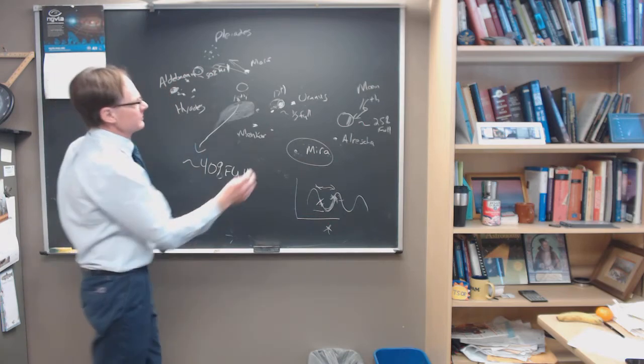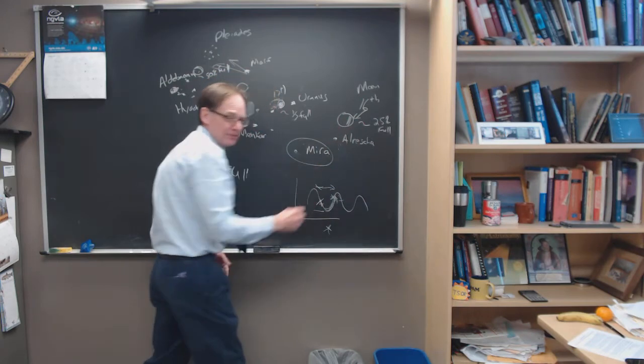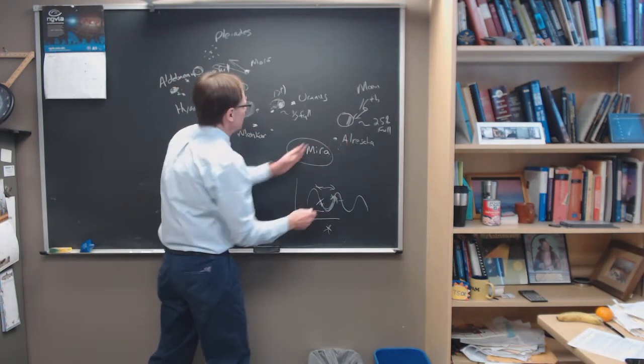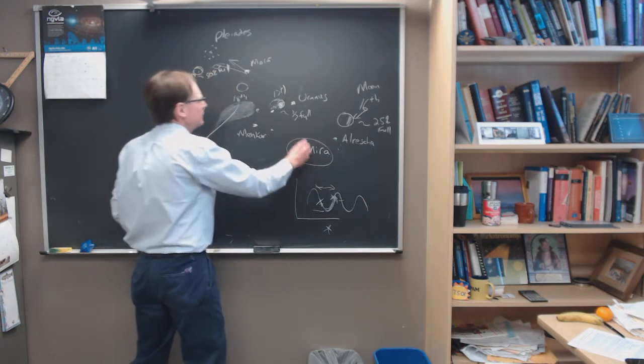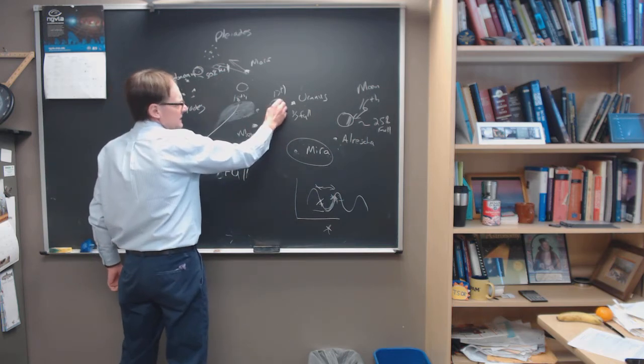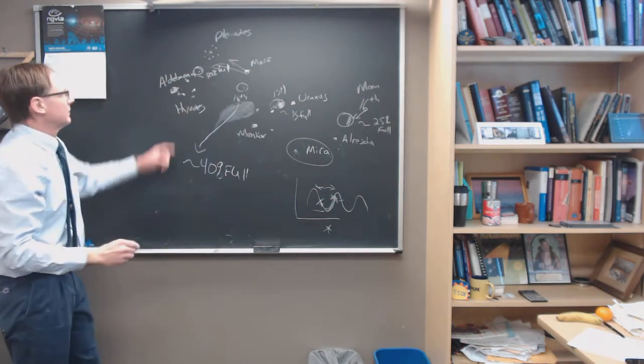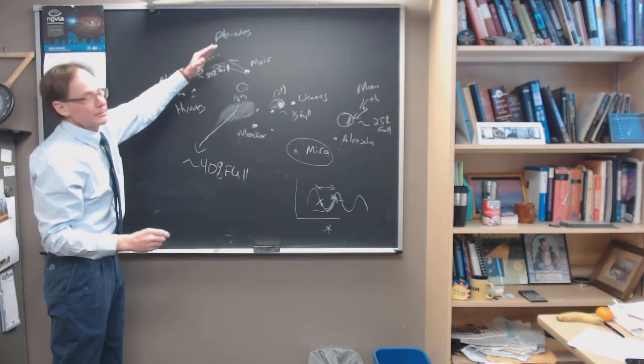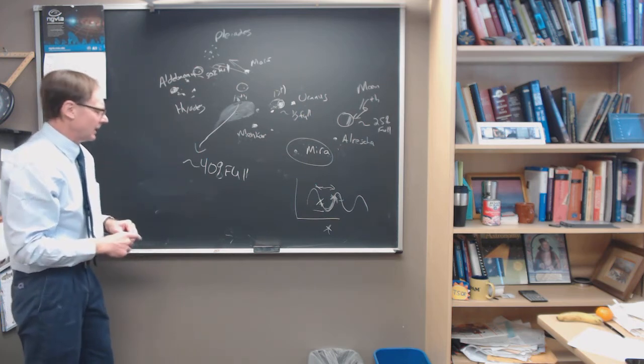So watch the moon this week. 16th over here at the edge of Pisces and getting ready to move this direction above Cetus. Use it to find Cetus. See if you can find Myra that way and the nice star Minkar here on the 17th. And then on the 18th, it's right under Mars. On the 19th, it will be over here between the Hyades and the Pleiades, two open star clusters in Taurus with the bright orange star Aldebaran.